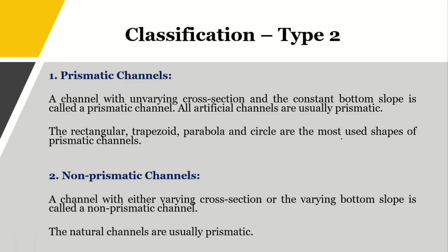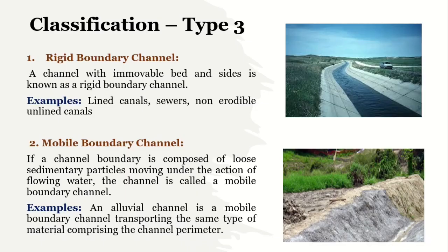Type 2 classification covers prismatic channels and non-prismatic channels. Prismatic channels are those whose cross section is constant — examples are all artificial, man-made channels which do not change cross section; if it's trapezoidal it stays trapezoidal, if circular it stays circular. Non-prismatic channels have a varying cross section or varying bed slope. All natural channels fall under non-prismatic because their cross section and bottom slope vary from place to place as they are naturally formed.